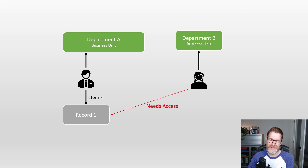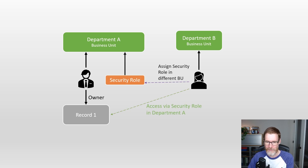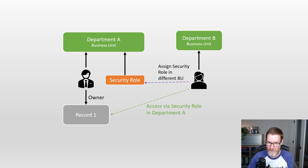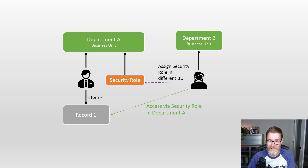This new functionality aims to simplify that particular use case. Rather than doing some of those complicated team-based or sharing-based approaches, you can simply say: I'm going to give the user in Department B a security role from Department A. Interestingly, under the covers, security roles have always been linked to business units, but you couldn't actually give a user a security role from a business unit outside of their own. Now, because I have the security role in Department A, I get access to records owned by users in Department A, just as if I were a member of Department A. So it's quite a big deal.